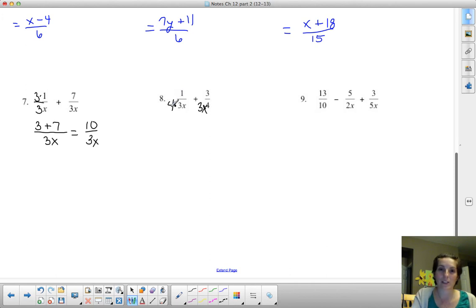Again, whatever I do in the denominator to make it match, I also have to do in the numerator. So I have to multiply this numerator by 4, and I have to multiply this numerator by 3x.